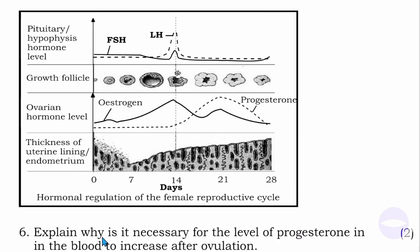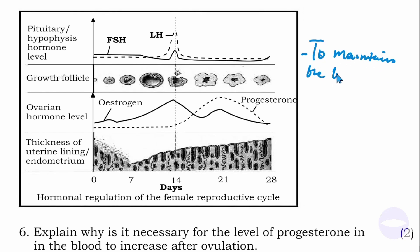Question number six: explain why it is necessary for the level of progesterone in the blood to increase after ovulation. After ovulation, the level of estrogen is decreasing, so progesterone has to take over in maintaining the endometrium. You can write: progesterone maintains the increase in the thickness of the endometrium. Progesterone increases because it needs to maintain the thickness of the endometrium.